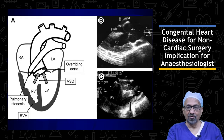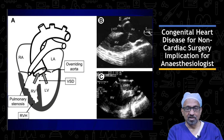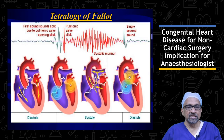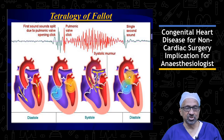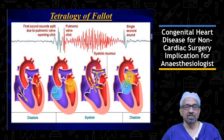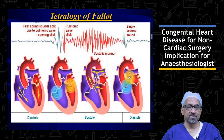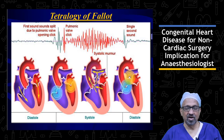This is a typical case of tetralogy of Fallot. The four components are: right ventricular outflow tract obstruction, right ventricular hypertrophy, overriding aorta, and ventricular septal defect. The auscultatory findings include a systolic murmur in the pulmonary area as a result of right ventricular outflow tract obstruction. The second heart sound may be muffled or single because of the muffling or absence of the P2 component as a result of pulmonary stenosis. The ejection systolic murmur may reduce in intensity in patients who have spells.